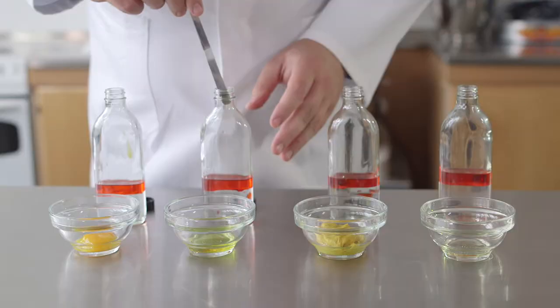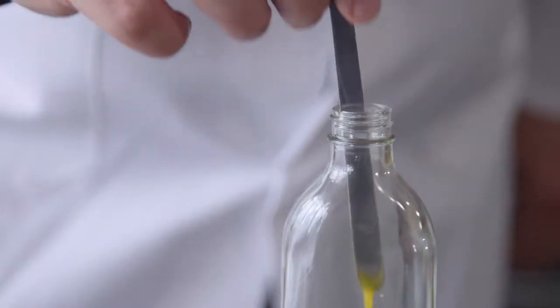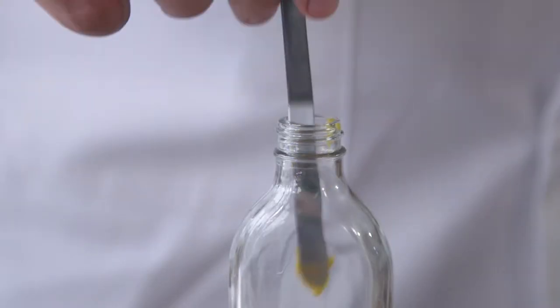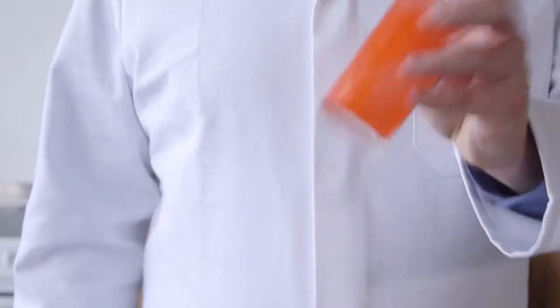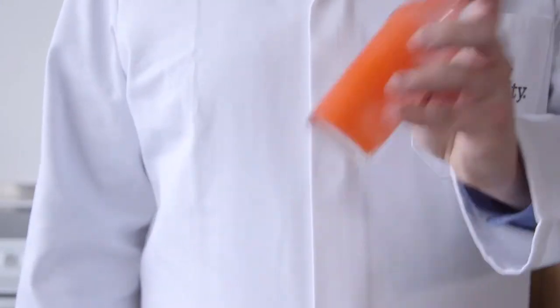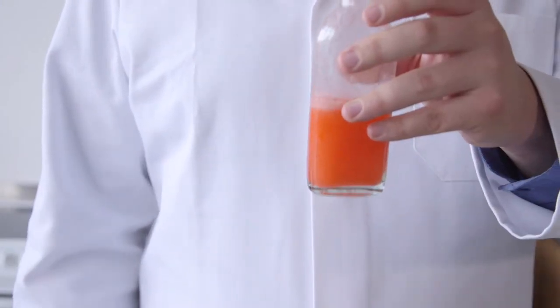Now we put a different emulsifying agent into each sample. Now we need to mix the layers to create our emulsions. When this is done commercially, a blender is used. But in the classroom, it is possible to use smaller quantities, and simply shake the mixtures vigorously for one minute.